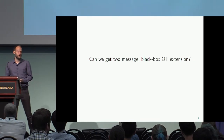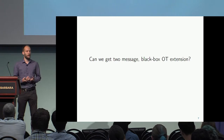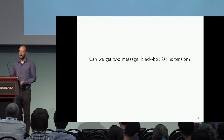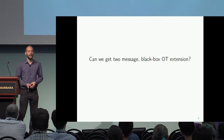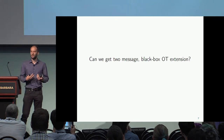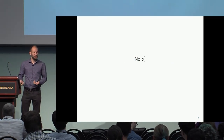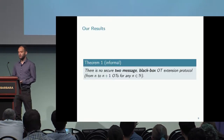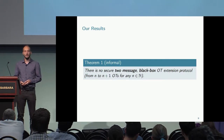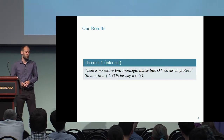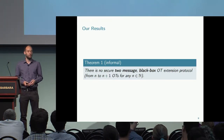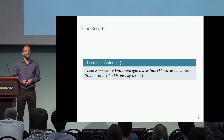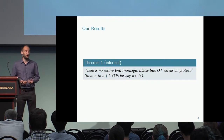This brings up a very natural question: can we get two-message blackbox OT extension? We tried to solve this and didn't manage to. When Mohamed Mahmoudi was visiting, the question arose of whether it is even possible — and it turned out, unfortunately, it is not. We proved a very strong impossibility result: there is no secure two-message blackbox OT extension, even if we start with an arbitrary amount of base OTs, and even if we just want to increase the amount of OTs by a single one.